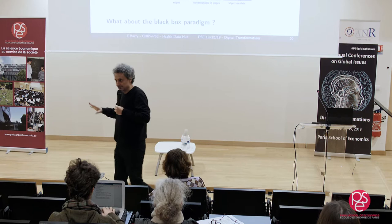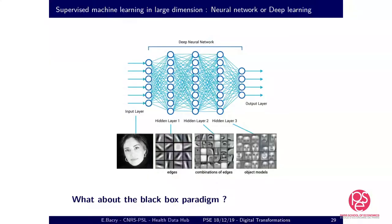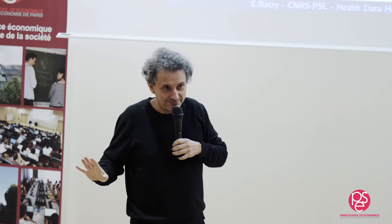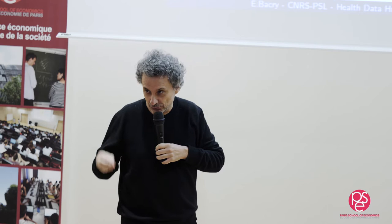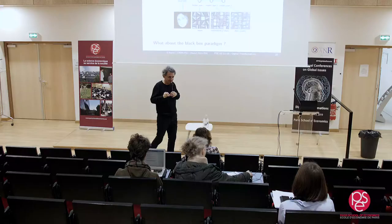The magical thing about neural networks is that we have an optimization algorithm that seems to work, even though this function is extremely complex with a lot of parameters. We have a way to find a good solution to the optimization problem. Why this optimization algorithm works and why it finds a good solution — from a mathematical point of view, we really don't know.